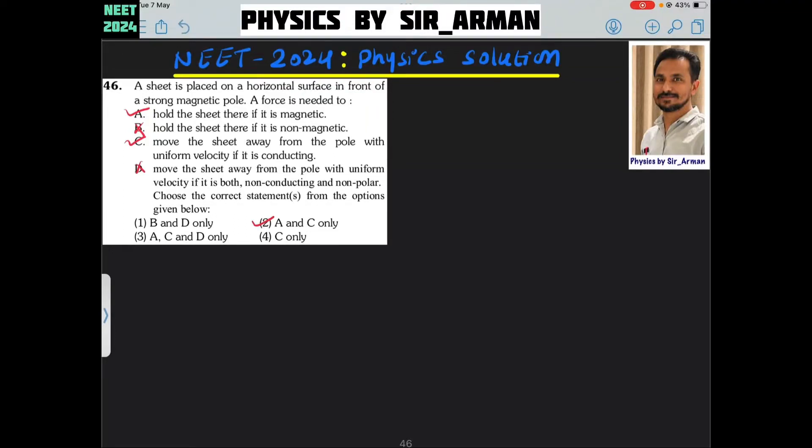Question number 46. A sheet is placed on a horizontal surface in front of a strong magnetic pole. So it is placed in front of a strong magnetic pole. So what will happen?